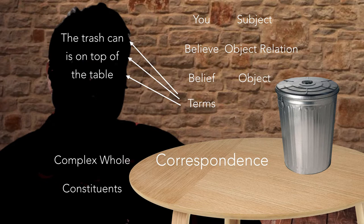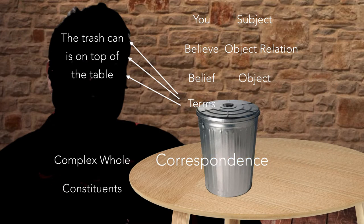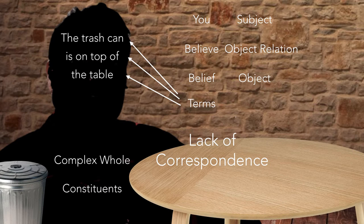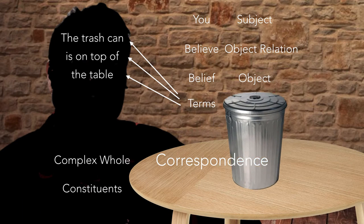What exists between these two? Another relation that exists between these two complex wholes is the relation of correspondence. For this Correspondence Theory of Truth, a belief is true just in case there's correspondence between the belief and the fact. If the belief is true, there's the belief, there's the fact, and there's the correspondence. If the belief is false, the belief still exists and there's still a fact — just not the fact that corresponds to the belief — and there's a lack of correspondence. So to sum up: if a belief is true, I've got the belief, the fact, and the correspondence, and if I've got all three, then I have truth. And that's the Correspondence Theory of Truth.